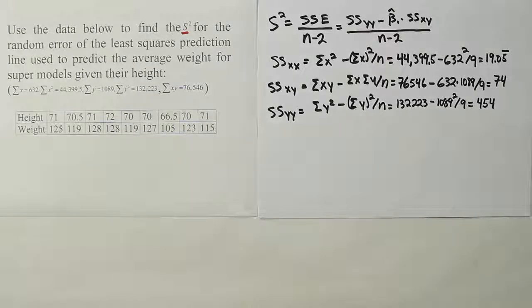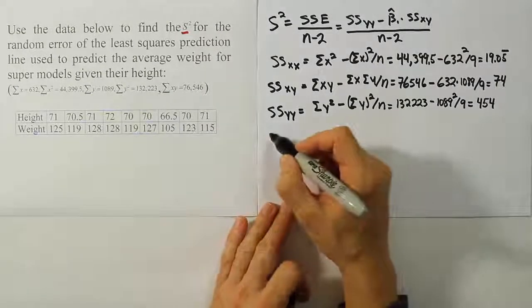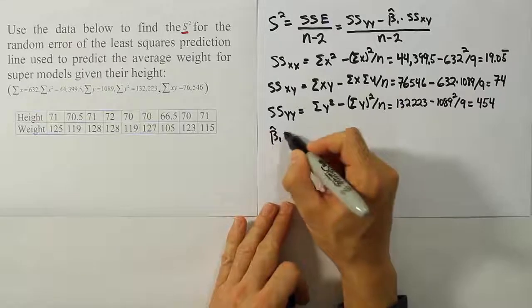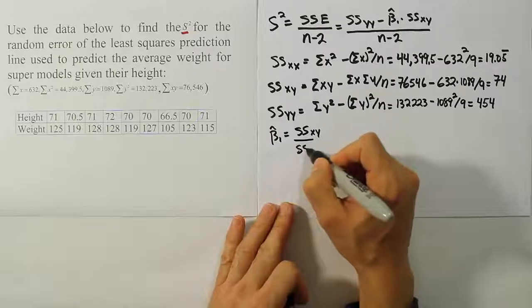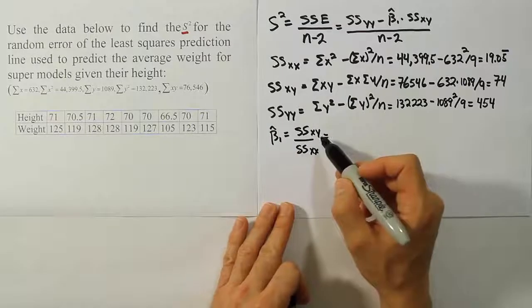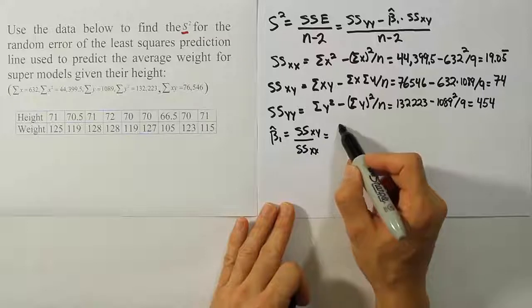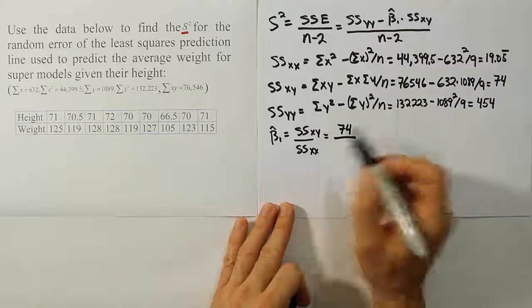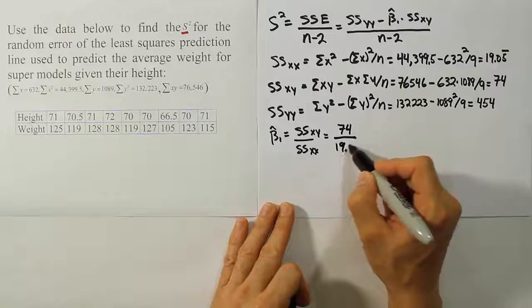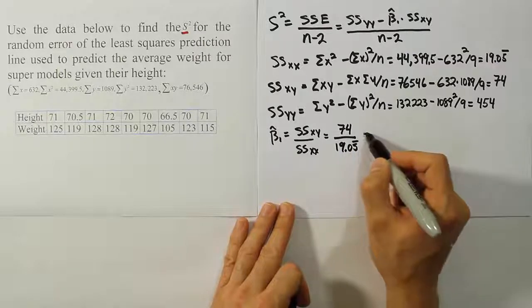Now it's our job to take those values and come up with the slope, so beta 1 hat. Remember that's the mixed term sum of square XY over sum of squares for the X value. So sum of squares for the XY term is going to be 74, and the sum of squares XX is 19.05 repeating.